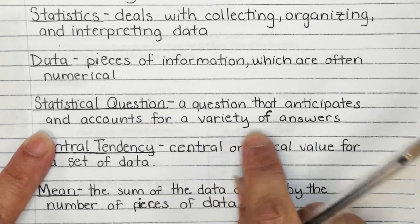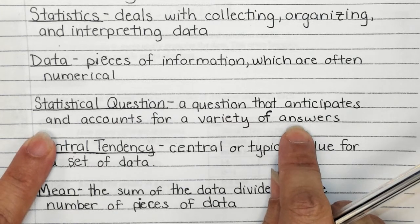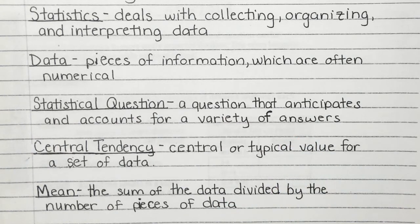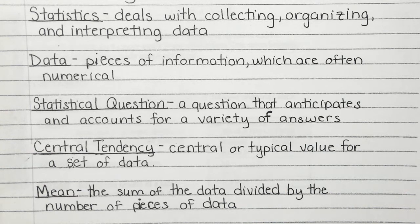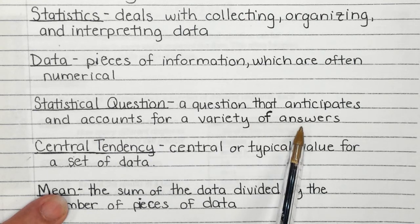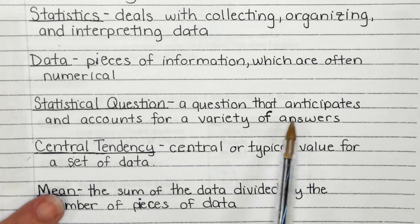Earlier we talked about how if I ask one kid a question — like looking at their feet and asking whether they have on a tennis shoe or flip-flop — and that one kid tells me they have on a tennis shoe, that is not a statistical question. It is just one answer from one kid. I call it kind of boring. Statistical questions account for a variety of answers.